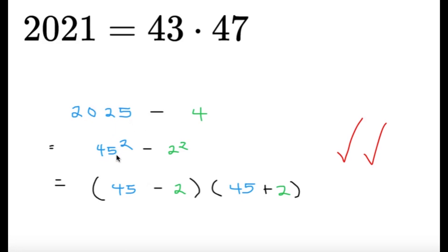Well, 2025 is 45 squared, 4 is just 2 squared, and just use the difference of squares formula to factor into these two. Now, 45 minus 2, this will give you 43, and then 45 plus 2, that's going to give you 47.